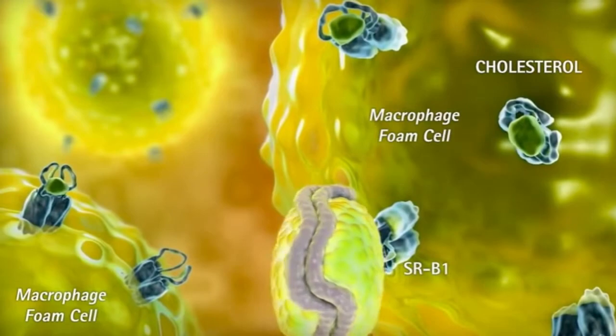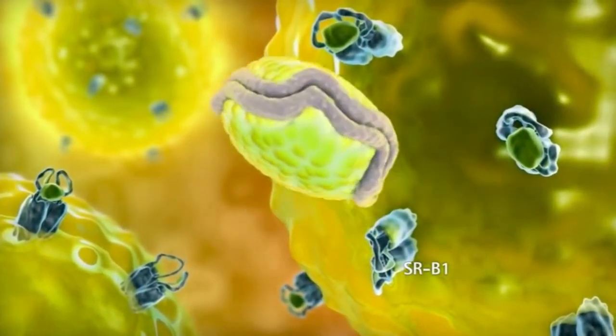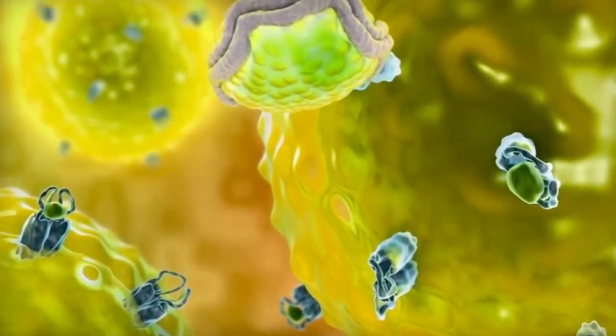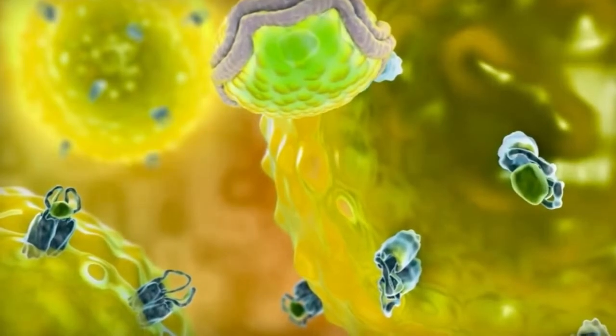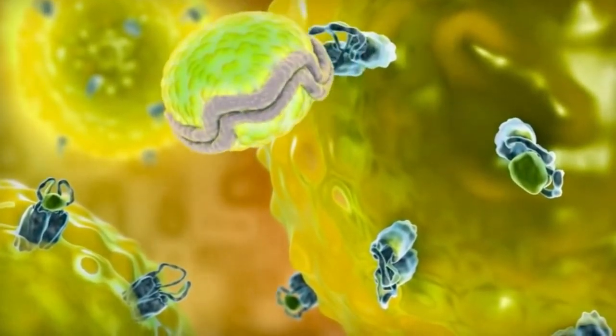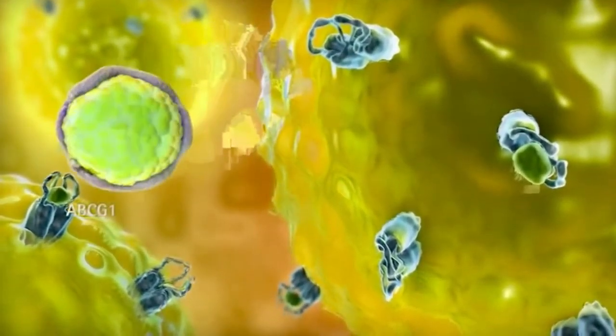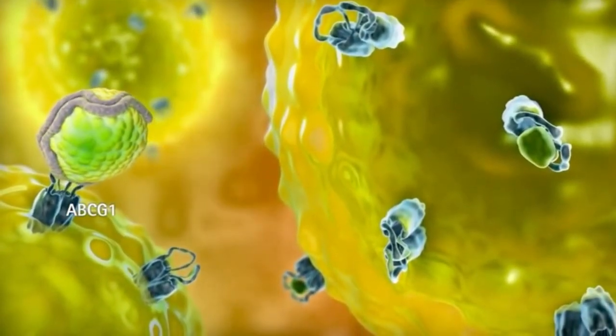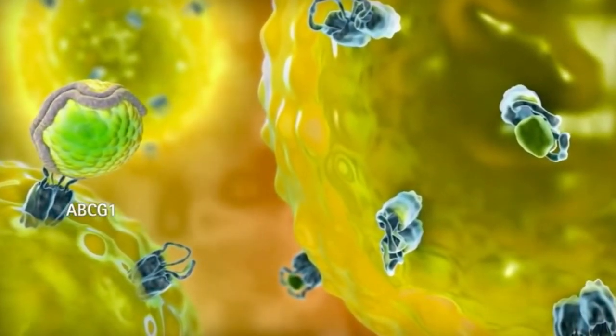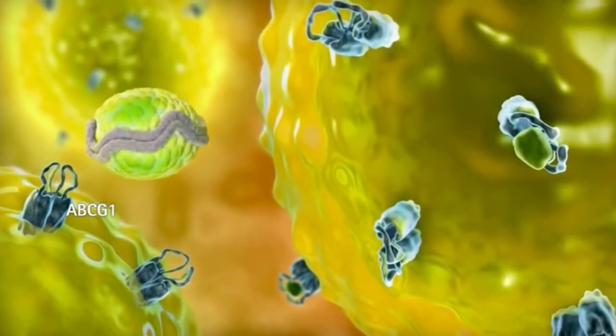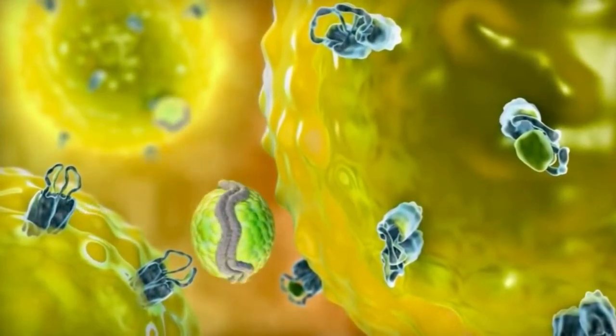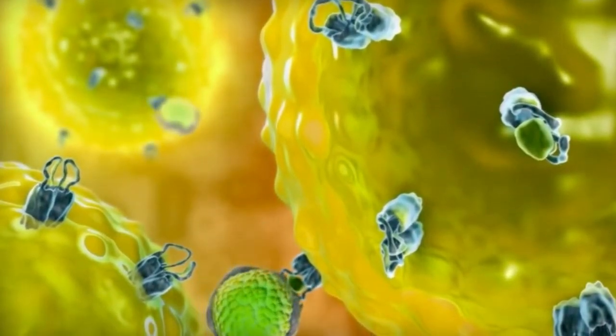The free cholesterol on HDL surface is esterified by lecithin cholesterol acyltransferase, LCAT, and is sequestered into the lipoprotein's core which forms the mature spherical HDL3. Further cholesterol removal by HDL3 occurs through SRB1 receptors in membrane cholesterol pools. As HDL3 collects more cholesterol sequestered by LCAT, it expands to HDL2.